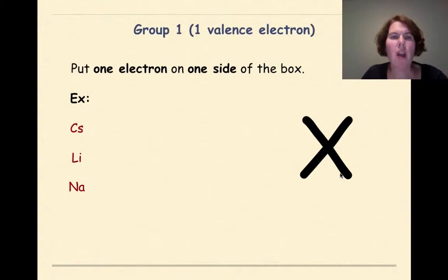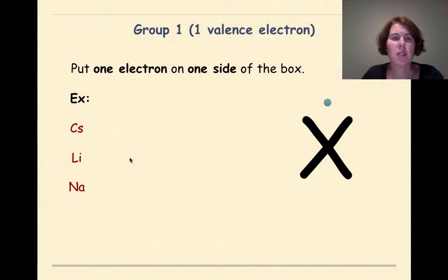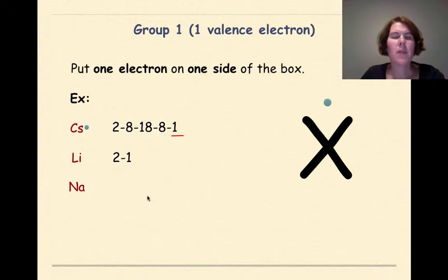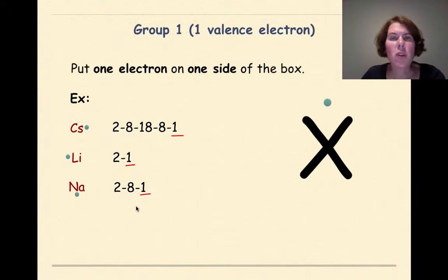For a group 1 element with one valence electron, we put one electron on one side of the box. Cesium has an electron configuration of 2, 8, 18, 8, 1 — one valence electron. Lithium is 2, 1 — one valence electron. Sodium is 2, 8, 1. It really doesn't matter where you put the dot to start with. Just remember you can only have a maximum of 2 electrons per side.